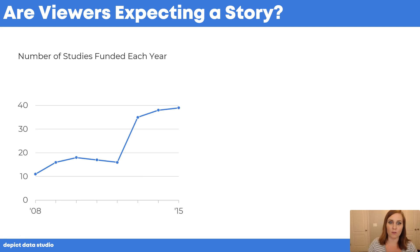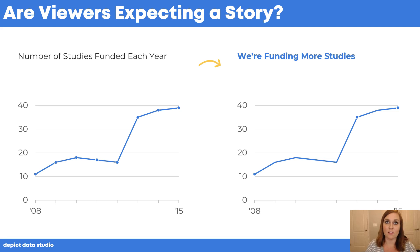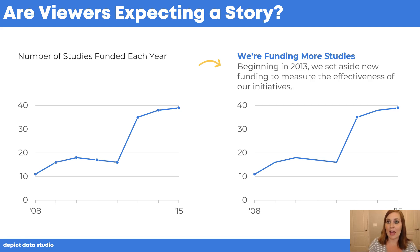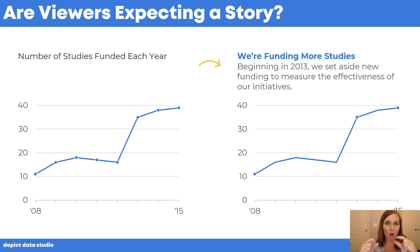Here's the final example, a little different from the ones before. It shows number of studies funded each year — the topic is in the title but there's no takeaway message, no 'so what.' The storytelling approach rewrites the title to state the message directly: 'We're funding more studies — the graph's going up.' For written projects you can also add a subtitle: 'Beginning in 2013 we set aside new funding to measure the effectiveness of our initiatives.' Subtitles are often hiding in the paragraphs above or below in your document, so grab that key phrase and stick it right next to the graph, so even skimmers know the key message and have the milestones and history they need.